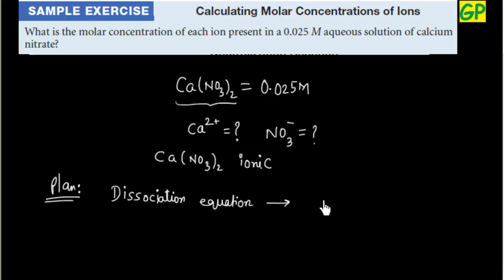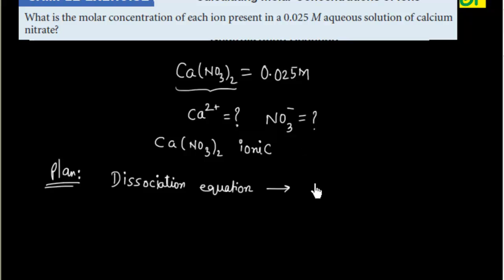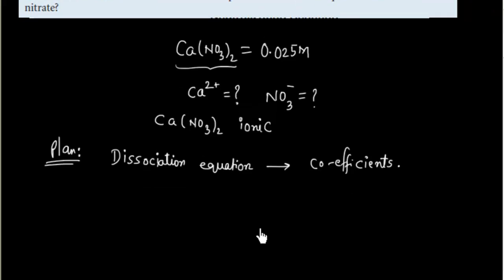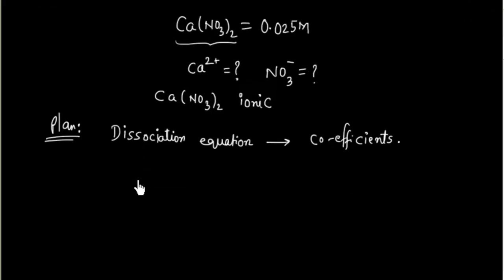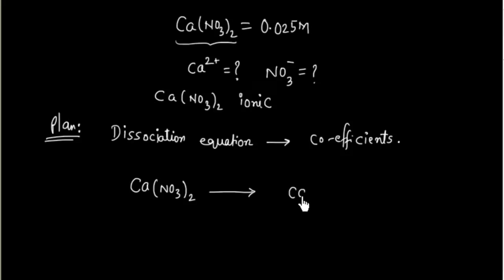We have to write the dissociation equation and then consider the corresponding coefficients. Calcium nitrate as an ionic compound in water will dissociate into ions. It will form Ca²⁺ plus 2NO₃⁻, because the coefficient here is 2.